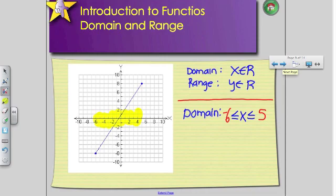So my X coordinates are in between negative 6 and 5. I don't say X belongs to real numbers, because this graph is not going forever.